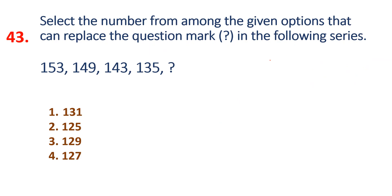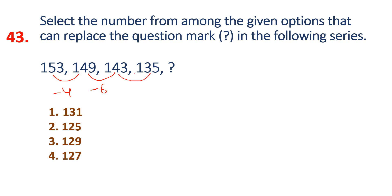Next, the 43rd question: Number series — very easy question. Here we have minus 4, minus 6, minus 8. If we have minus 4, minus 6, minus 8, the next thing is minus 10. 135 minus 10 is 125. Option 2 is the answer. This is very easy. Here we have minus 8, so next is the 44th question.